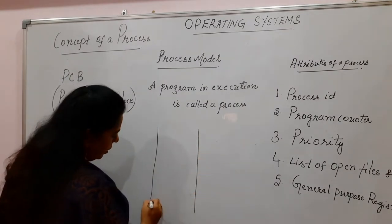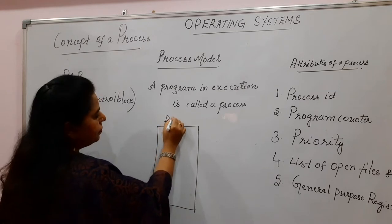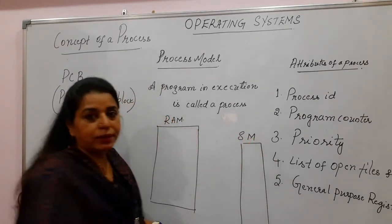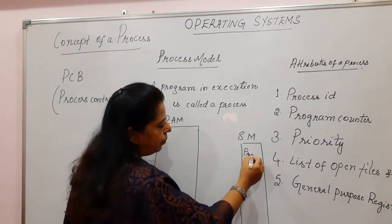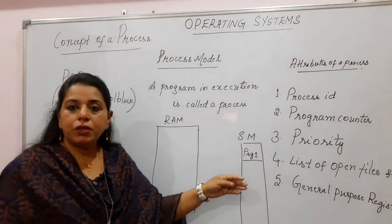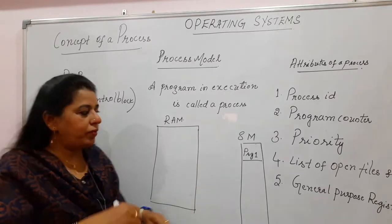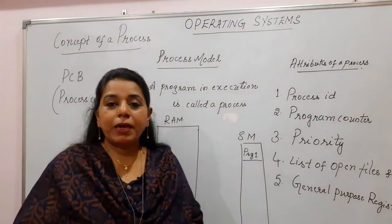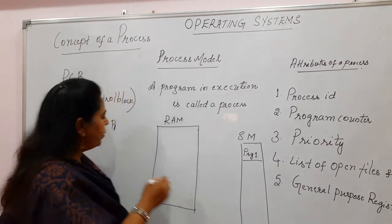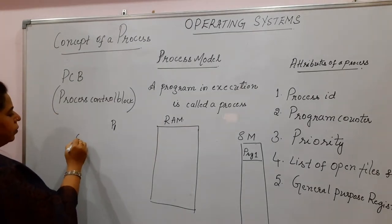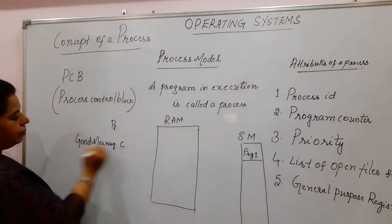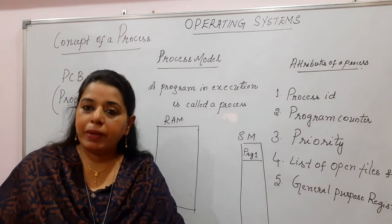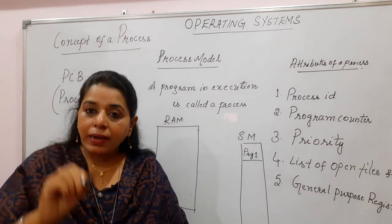In the diagram, we have the RAM and secondary memory. Your program, say PRG1, resides in secondary memory. For execution, it is moved into the primary memory, and from that point we start calling it a process — so PRG1 becomes P1. The program is written in a high-level language by the user, for example a program called 'good morning dot c' written in C language, which must then be converted into machine language understandable by the machine.